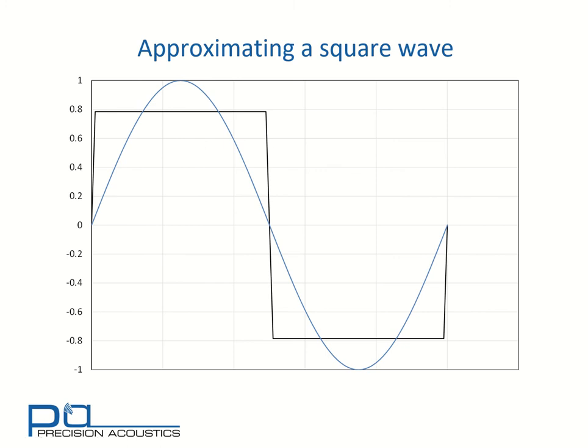Conveniently, there is a signal which would give us that — a sinusoid with three times the frequency. But because we only need to make a moderate correction we can reduce the amplitude. In fact, in this case we are looking at an amplitude which is a third of that of the original sinusoid.